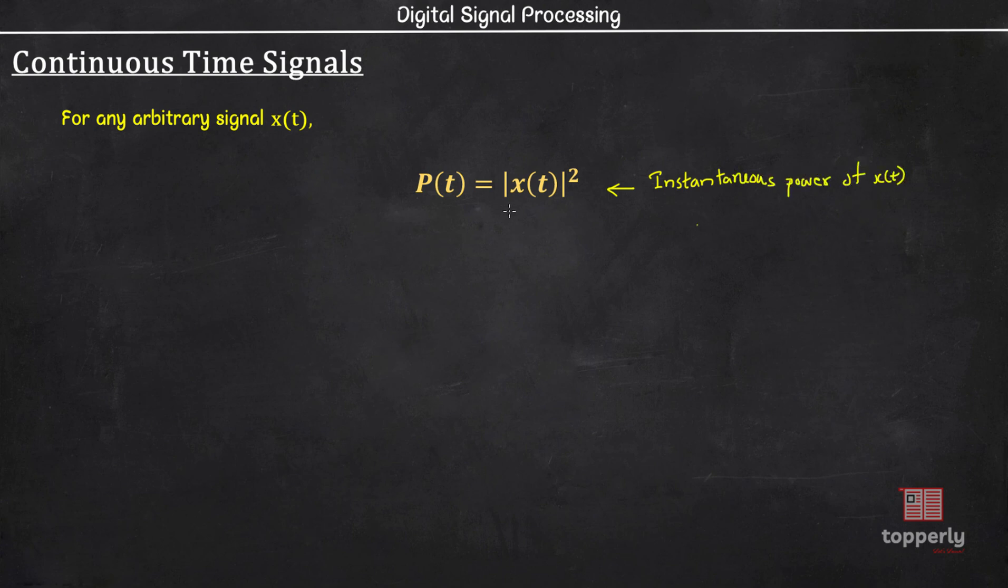There are two points to be noted here. This magnitude squared is used to allow the possibility of X(t) being a complex signal. Next point is, although we express the power of a signal as this quantity, in reality signals by themselves don't have any power or don't dissipate power unless they are passed through some resistive element.